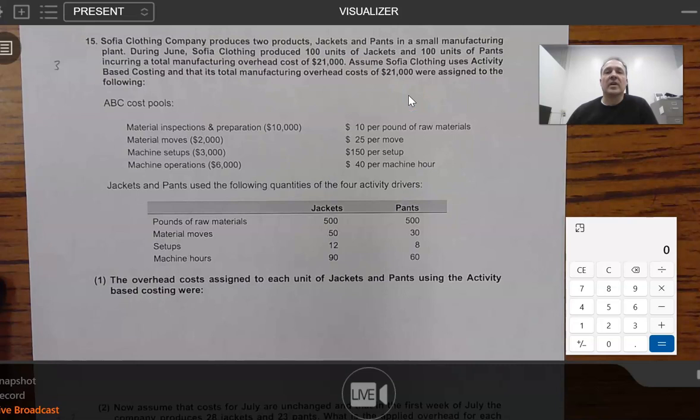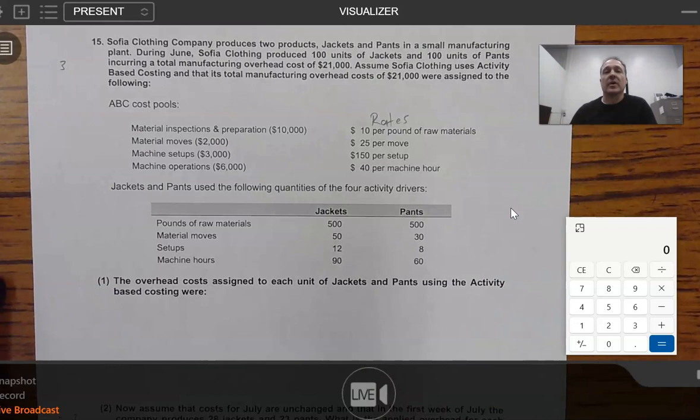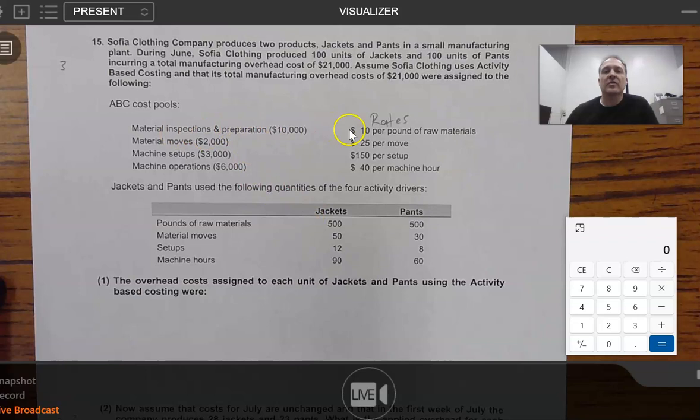And then what they've done here in this particular question is they have calculated our cost driver activity rates. They've done that for us. So let's just make sure that we know what these figures are here. These are our rates. And so how did they get this? Well, I want to tell you, they took this $10,000 here and they said materials inspection and preparation, what is the cost driver? They said pounds of material. Okay, so how much is that for every pound? Well, they said, okay, pounds of materials for both products, 500 and 500, that's a thousand. So anyway, $10,000 divided by a thousand equals $10 per pound. And so you don't really have to do that because they've done it for you. I just want you to understand where these numbers are coming from.